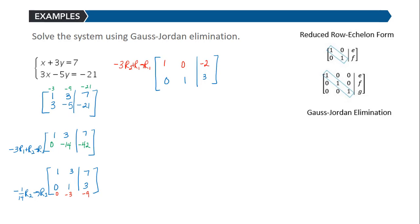Now I have it in reduced row echelon form. I've used Gauss-Jordan elimination to get there. Converting this to the system tells me that x plus 0 is equal to negative 2. In other words, x is equal to negative 2. 0 plus y is equal to 3. So the solution of this system is the ordered pair negative 2, 3.